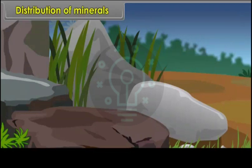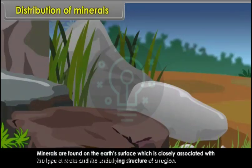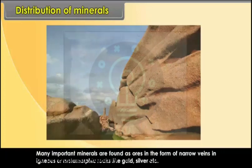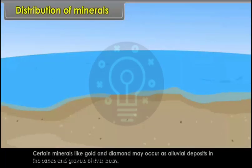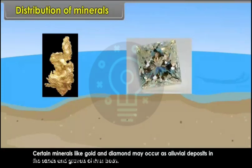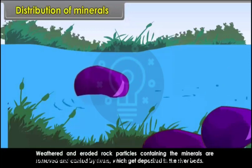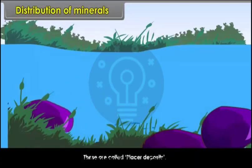Distribution of minerals: Minerals are found on the earth's surface, closely associated with the type of rocks and the underlying structure of a region. Many important minerals are found as ores in the form of narrow veins in igneous or metamorphic rocks, like gold, silver, etc. Certain minerals like gold and diamond may occur as alluvial deposits in the sands and gravels of river beds — these are called placer deposits.